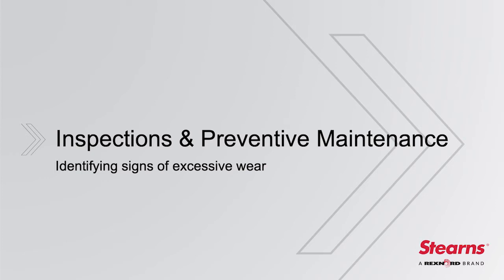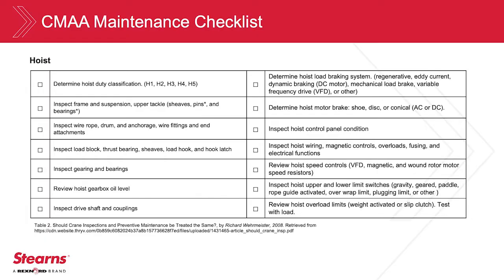Avoid costly downtime by implementing a preventative maintenance program for your crane equipment or individual drive system components. Scheduled maintenance can help you identify signs of wear so you may replace or upgrade individual components for better performance, requiring less maintenance and less downtime going forward. Ensuring safety is the biggest challenge for overhead crane owners. Continued training and a thorough understanding of the equipment, as well as the CMAA inspection standards, ensure your overhead cranes and hoists are working properly. The CMAA has a well-defined maintenance checklist to help guide individual component inspection. Check with your crane manufacturer for additional maintenance guidance.